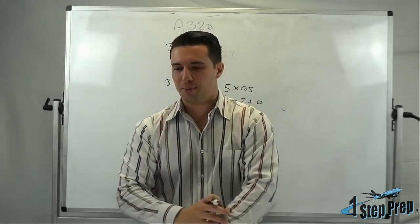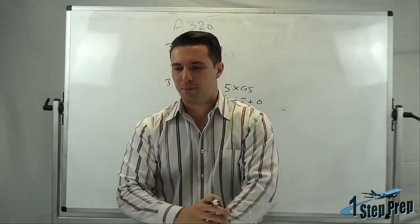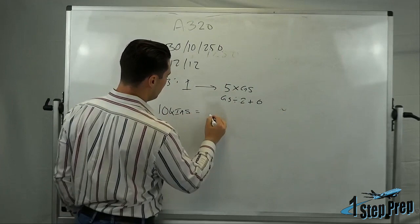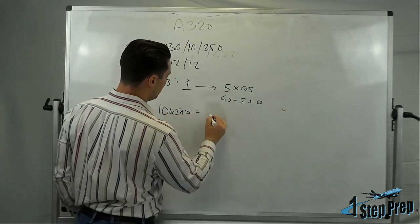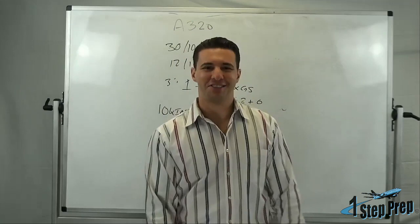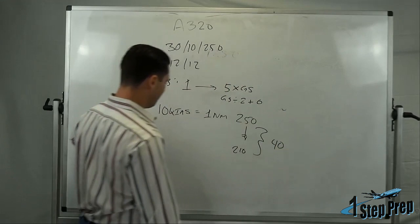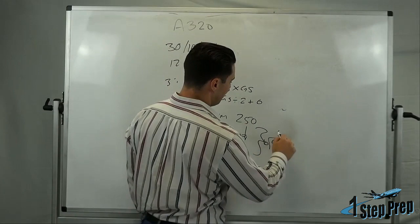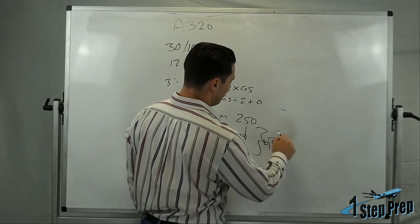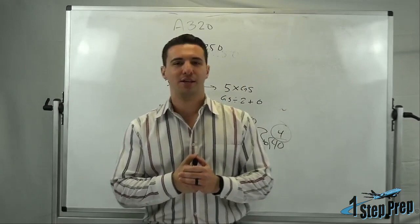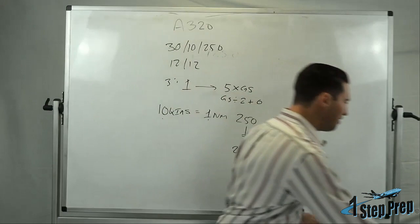Another rule: decelerating from a level flight segment, for every 10 knots of deceleration one mile is needed. So if you're doing 250 knots and want to slow to 210 — that's 40 knots — divide 40 by 10, and you need 4 miles. This assumes level flight. If you're descending, you're going to need about twice that distance. It's quite significant — the difference between level and descending.